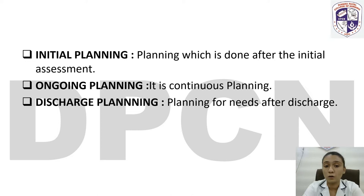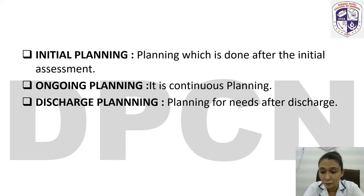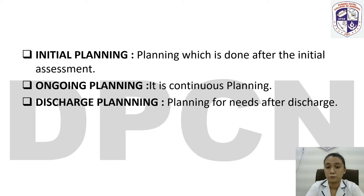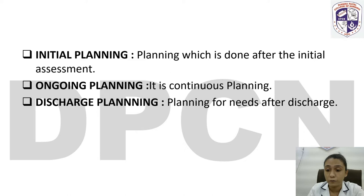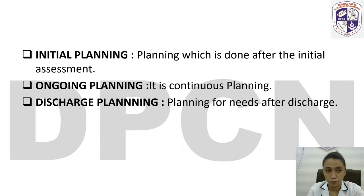Second, ongoing planning: it is continuous planning. When a patient is admitted in the hospital, day by day what we plan and what treatment we give to the patient — that is ongoing planning. Third, discharge planning: planning for the patient's needs after discharge. When the patient is discharged, we plan treatment based on their needs, give medicines, suggest home remedies, and recommend physiotherapy.